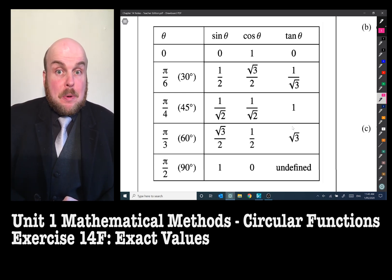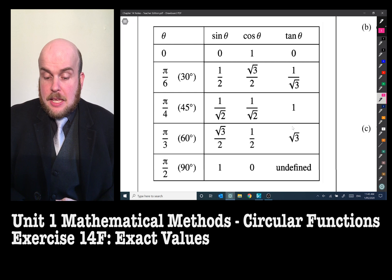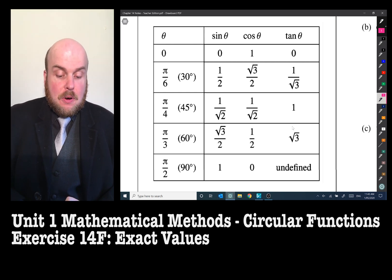We've already been exploring 30 degrees or pi on six in previous videos, but we've got a bunch of the values as in sine, cosine, and tan for 30, 45, 60, and 90 degrees.